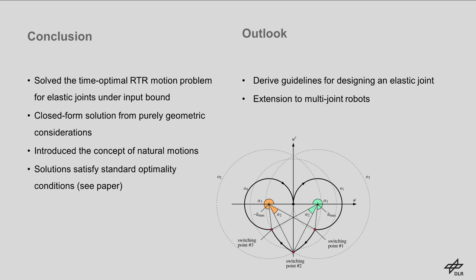In conclusion, we solved the time-optimal rest-to-rest motion problem for elastic joints under input bounds. The solutions are provided in closed form and were obtained from purely geometric considerations. Further, we introduced the concept of natural motions. As shown in our paper, the proposed solutions satisfy standard optimality conditions. The proposed geometrical framework provides valuable insight into the rest-to-rest motion problem. And we want to use this insight to derive guidelines on how to optimally design an elastic joint. Thank you.